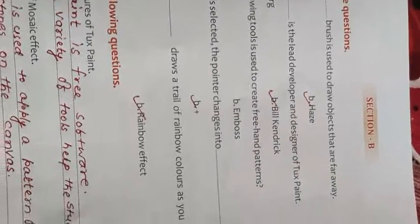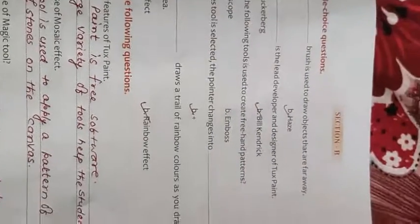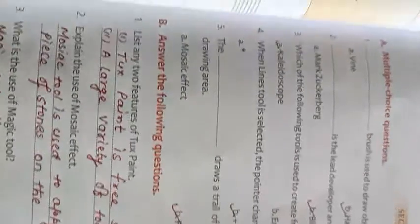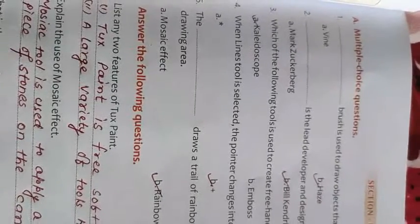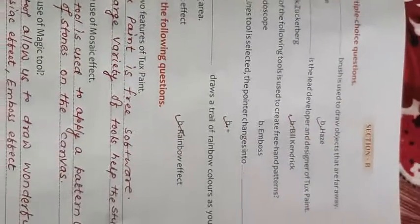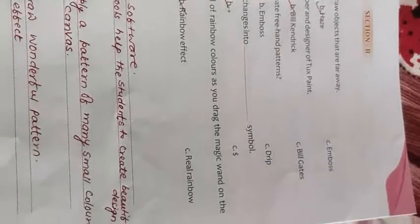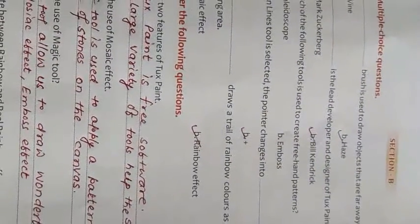And when line tool is selected, the pointer changes into dash symbol, plus symbol. And fifth question. The dash draws a trail of rainbow color as you drag the magic wand on the drawing area. Answer is rainbow effect.